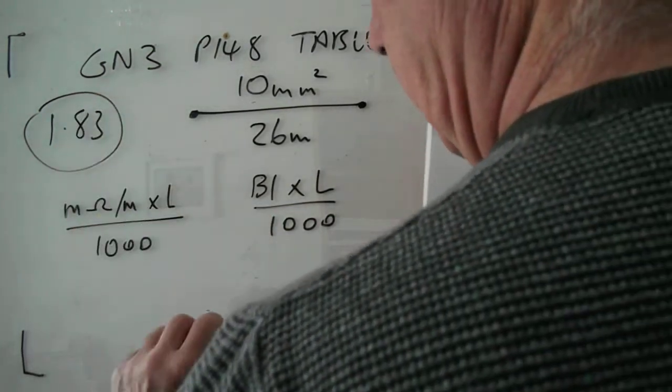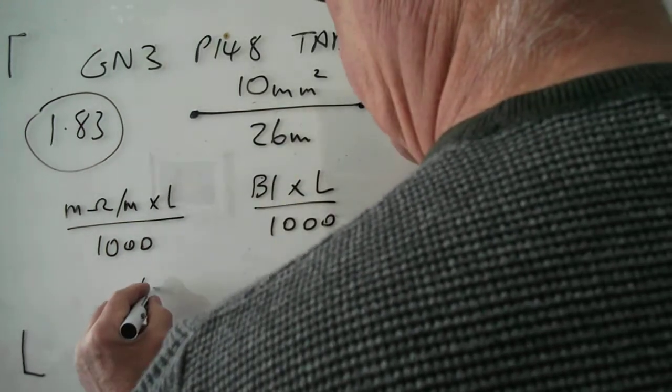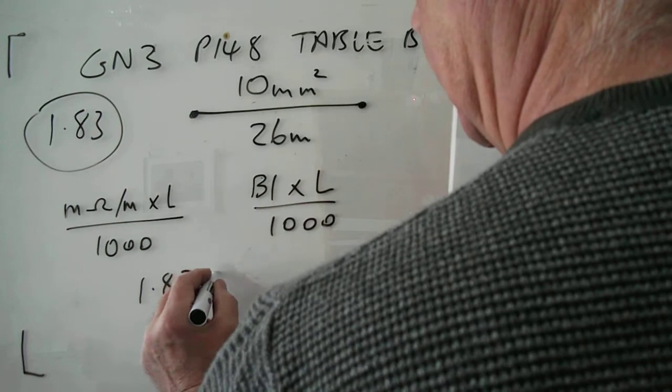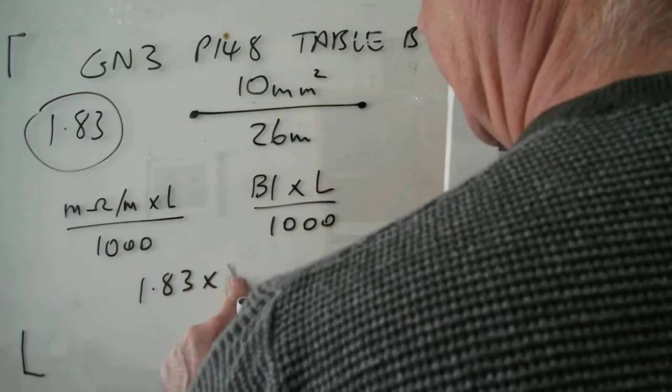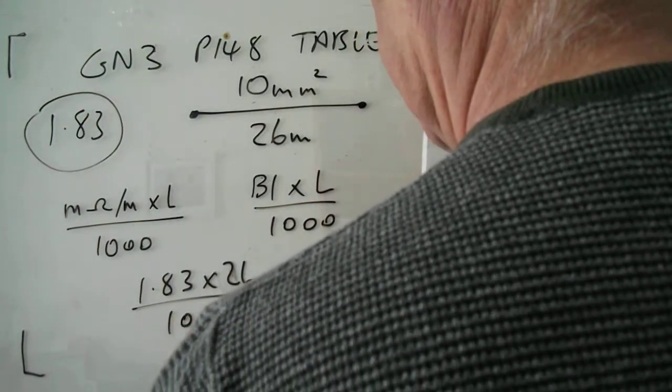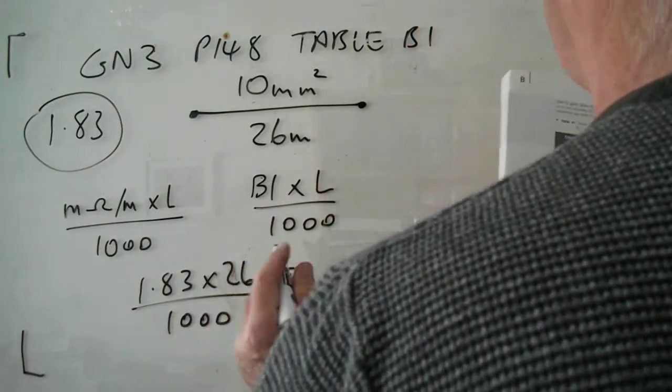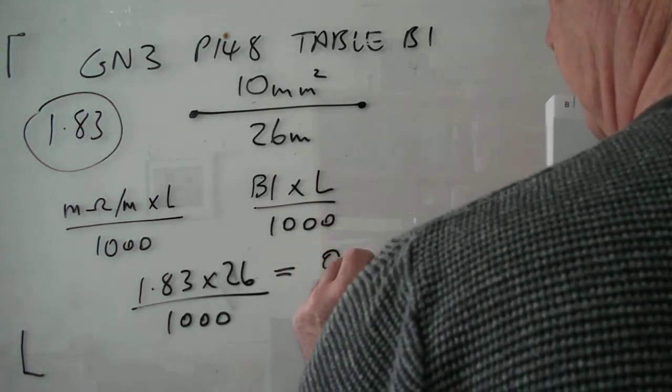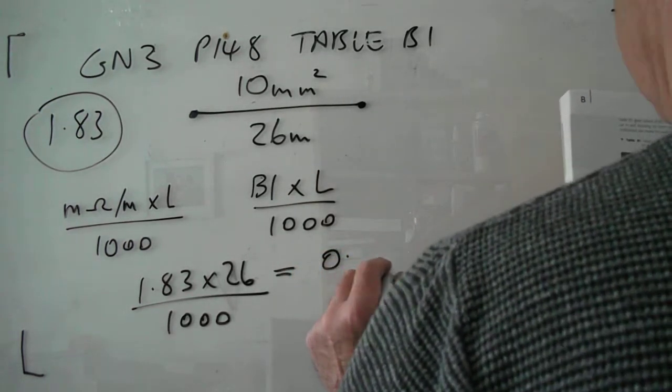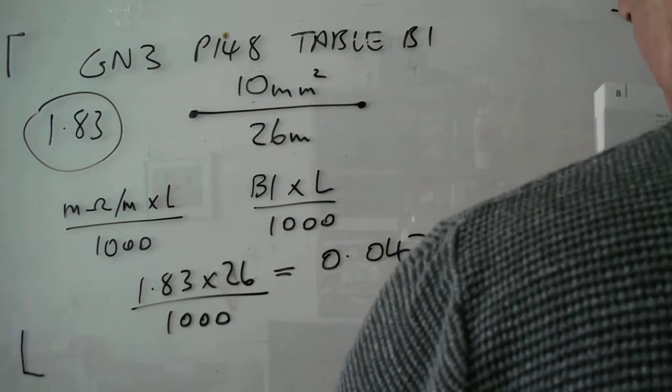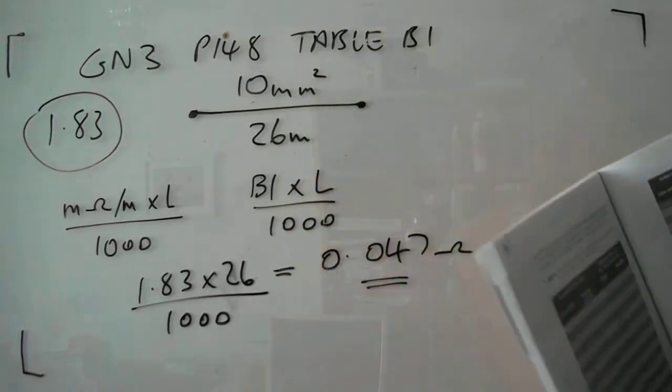So the figure is, you put the figures in: it's 1.83 times 26 divided by a thousand. You do that on your calculator, that comes out to 0.047 ohms.